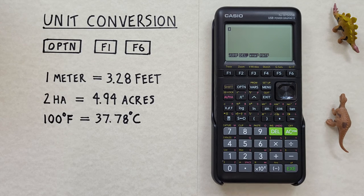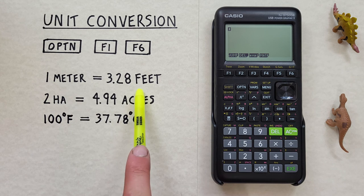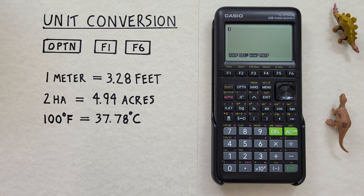Hello and welcome to HD Calcs. I'm Rick and in this video we're going to have a look at how we can convert between different units like for example metric and imperial on the Casio FX 9750 G3 calculator.